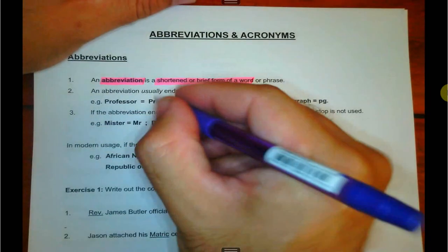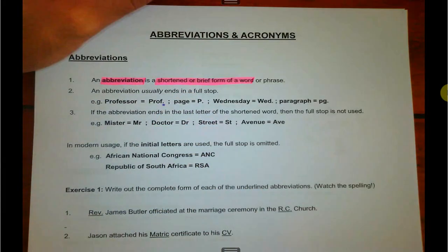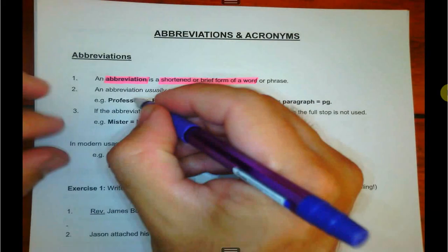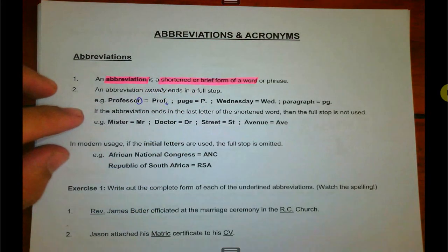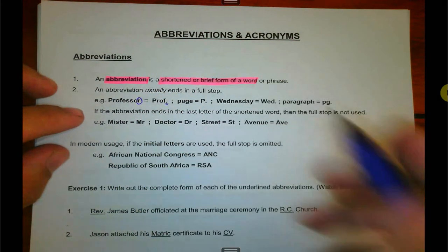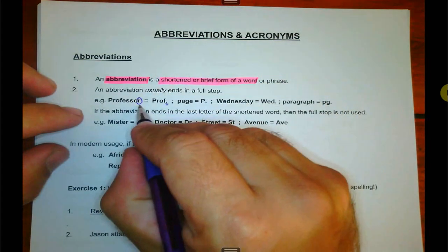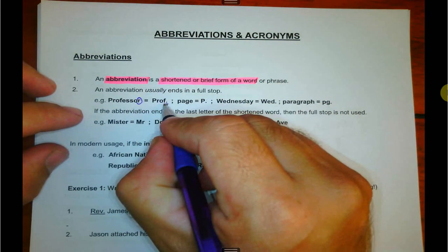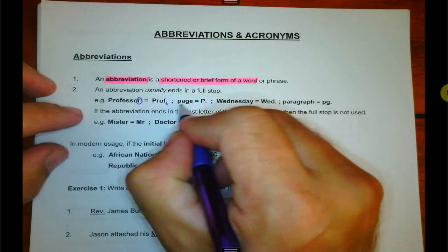What we need to look at is: why is there a period or full stop? Professor ends in an R, but the abbreviation ends in an F. Because this letter and this letter are not the same, we put the full stop or the period. That period shows that there's more to come — there's more to this word.